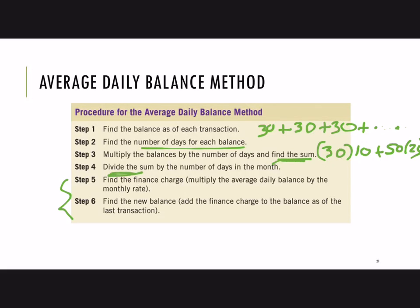That brings us to the last two steps. We find the finance charge by multiplying the average daily balance by the monthly rate — if it's 2%, we do 0.02 times the average daily balance. Then finally, the new balance is the last balance carried on the card plus the interest charge. That's an overview; it will be more clear as we work through an example.